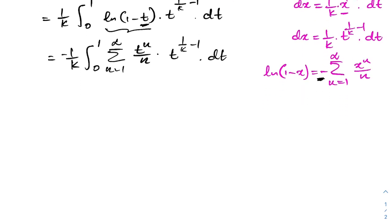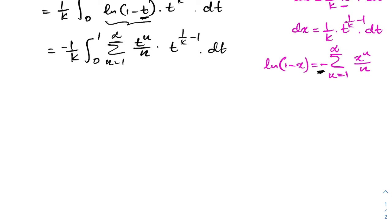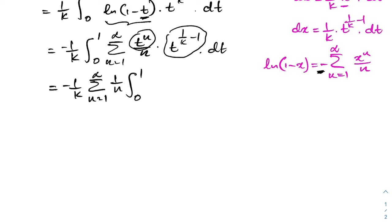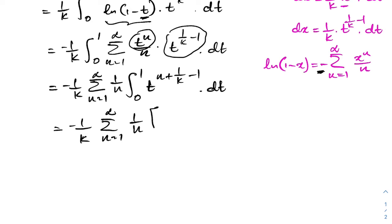We can switch the sigma notation and integral sign, writing minus (1/k) times the sum from n equals 1 to infinity of (1/n) times the integral from 0 to 1 of t^(n plus 1/k minus 1) dt. We can integrate using the general power rule, giving (1/n) times t^(n plus 1/k) divided by (n plus 1/k), evaluated from 0 to 1.